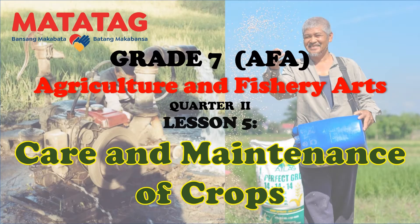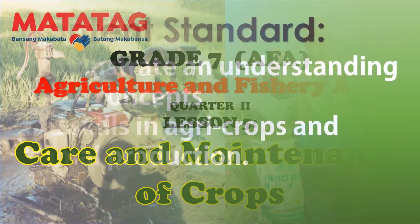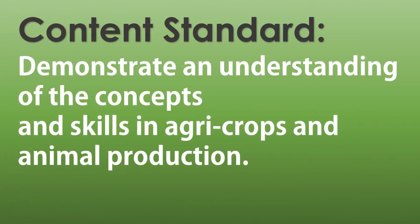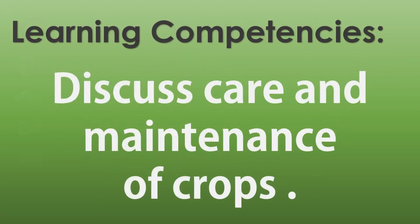Grade 7 TLE — Agriculture and Fishery Arts, Lesson 5: Care and Maintenance of Crops. The content standard for this lesson is to demonstrate an understanding of the concepts and skills in agri-crops and animal production. The learning competency is to discuss care and maintenance of crops.